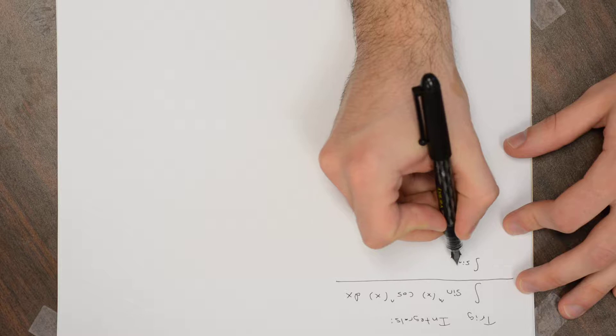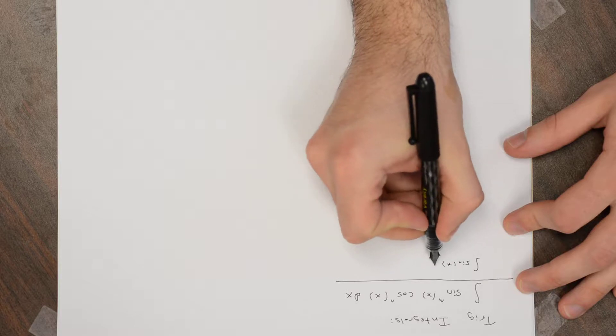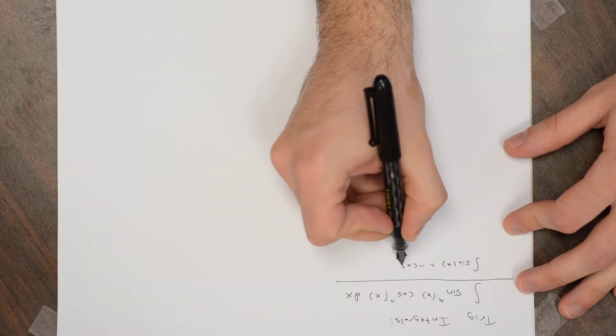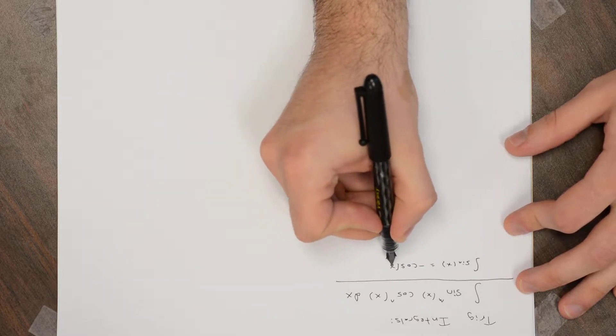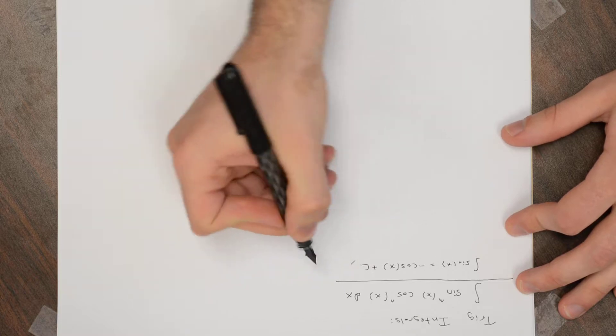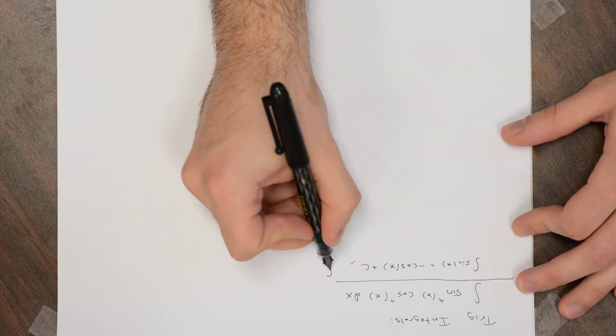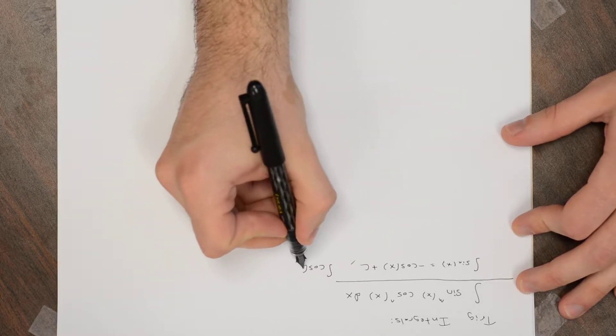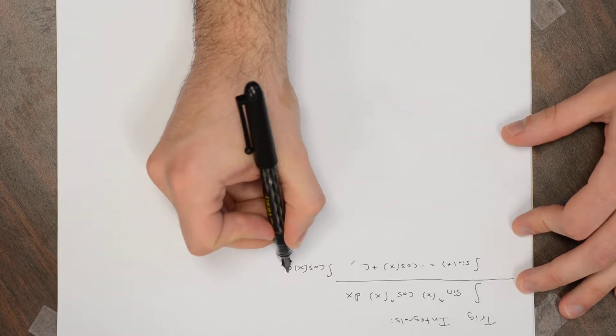The integral of sine is going to be minus cosine, because the derivative of cosine is minus sine. And the integral of cosine is sine.